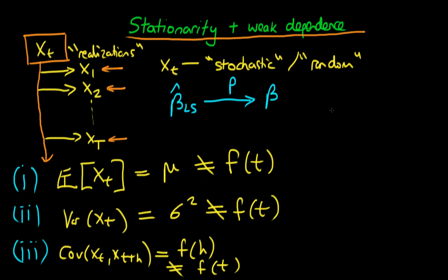What are the conditions we require for a process to be weakly dependent? It turns out that the correlation of Xt with Xt plus H must tend to zero as H tends to infinity.